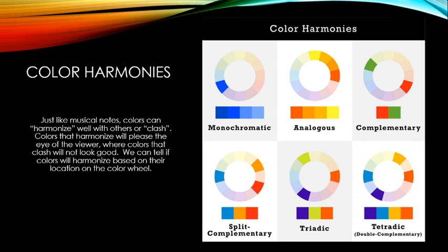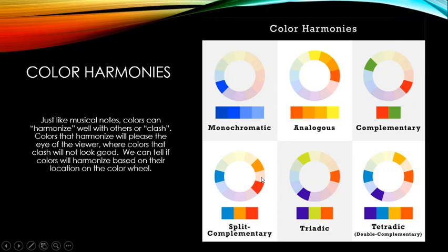A split complementary is a little less striking but still very pleasing. You take a base color — say blue — find the complementary directly across the wheel, but instead of using that exact complementary, you pick the colors just adjacent to it. For blue, instead of pure orange, you'd use the tertiary colors of goldenrod and reddish orange.